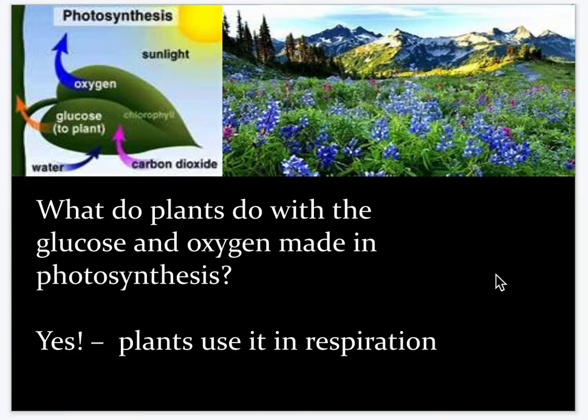So what do plants do with the glucose and oxygen they make in photosynthesis? Plants intend to use it themselves. Usually we use up the oxygen before they do, and we often eat plants — or if you're a meat eater, the meat you're eating somewhere down the line ate plants and used that sugar source. But plants are generally making that sugar and oxygen for themselves for later.